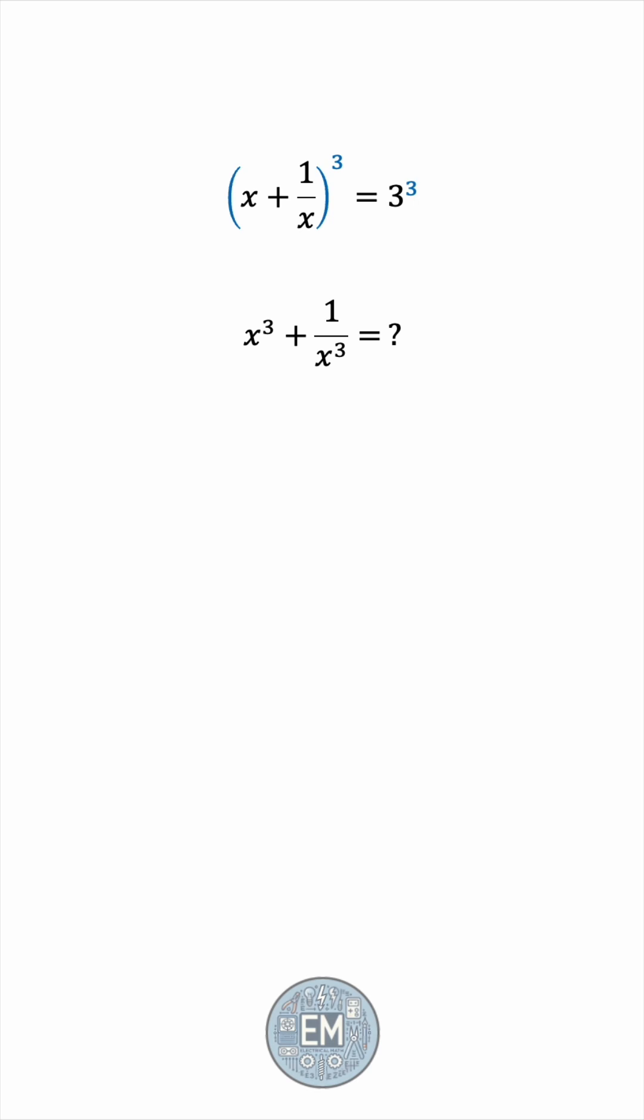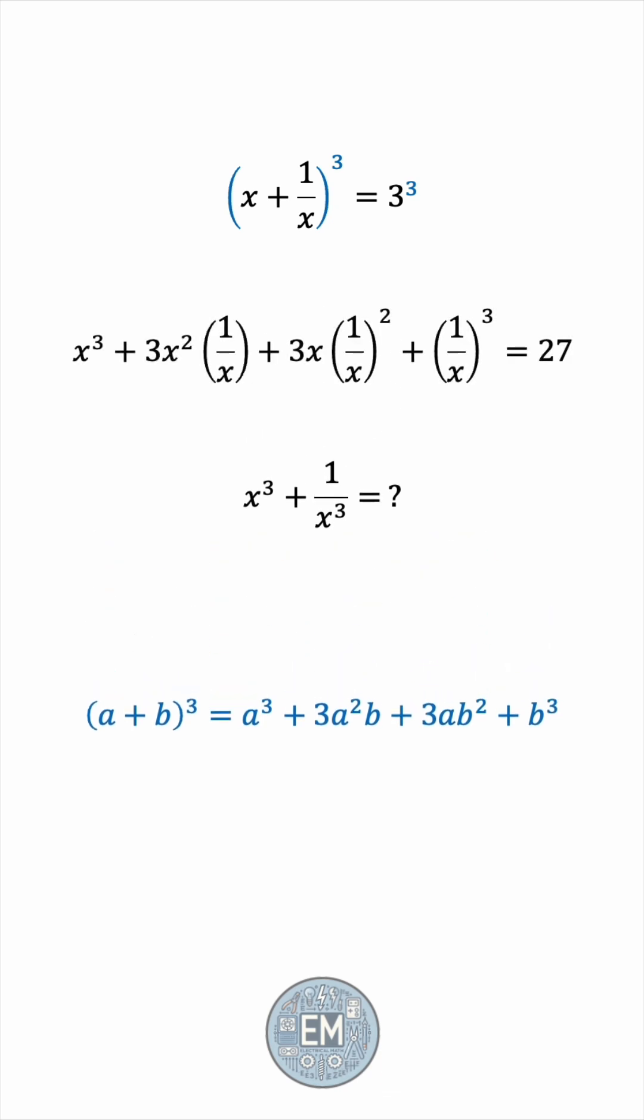Using the formula for the cube of a sum, we get x cubed plus 3x squared times 1 over x plus 3x times the square of 1 over x plus the cube of 1 over x. The cube of 3 is of course 27.